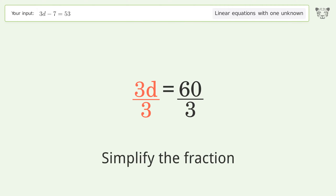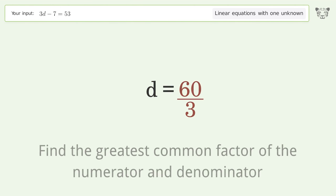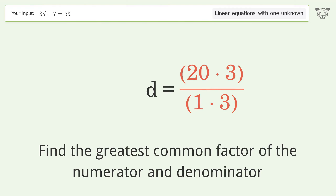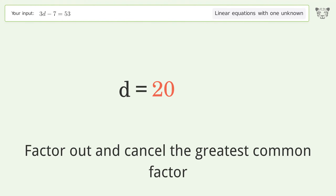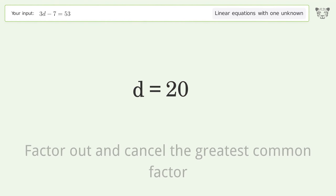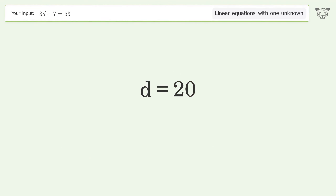Simplify the fraction by finding the greatest common factor of the numerator and denominator. Factor out and cancel the greatest common factor, and so the final result is d equals 20.